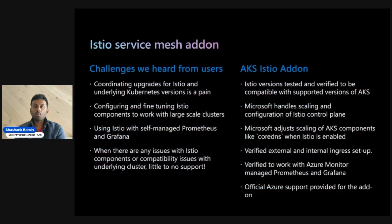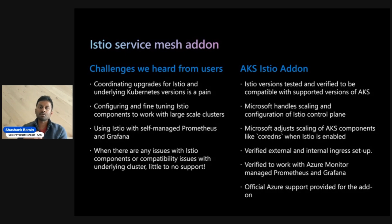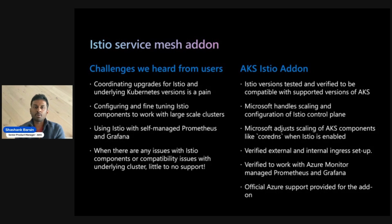Now, what challenges did we hear from customers and what have we done about them? The main one was version management and upgrades. We have a story for both patch version and minor version upgrades — at any given point in time we have two versions officially in support, and upgrade APIs and commands are available to help with the whole upgrade process. You can deploy a canary of the new revision, make sure everything is working, and then complete the upgrade or roll back. For large-scale clusters we also do fine-tuning of deployed components, including adjusting scales of components like CoreDNS.